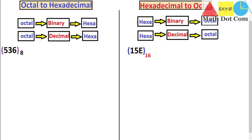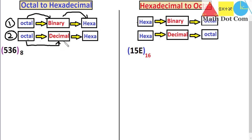Hello everyone. Today we are going to learn the very important topic of number system conversion — octal to hexadecimal and hexadecimal to octal. We will learn two different methods that you can use for the conversion. In method one, we convert the octal number first into binary and then into hexadecimal. In method two, we first convert octal into decimal and then decimal into hexadecimal.